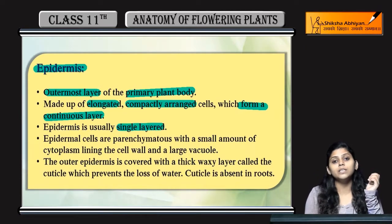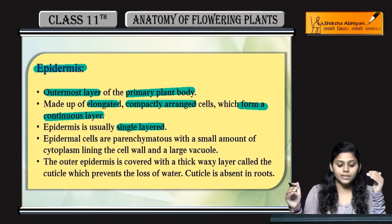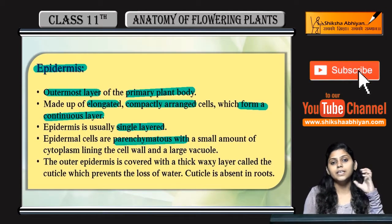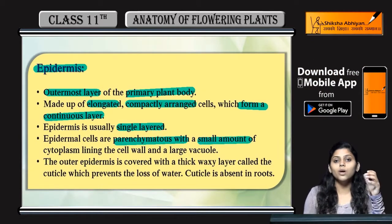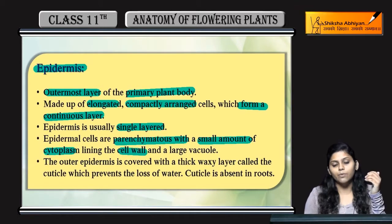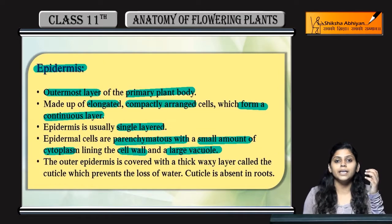Epidermis is usually a single layer. The epidermal layer is made of parenchymatous cells, with a small amount of cytoplasm lining the cell wall, and a large vacuole present in the centre.